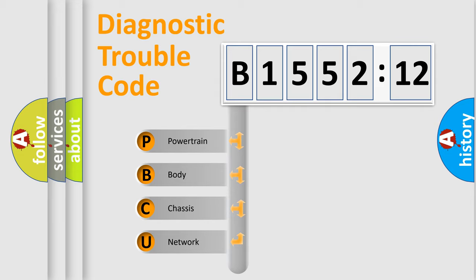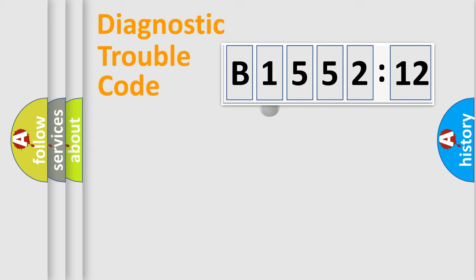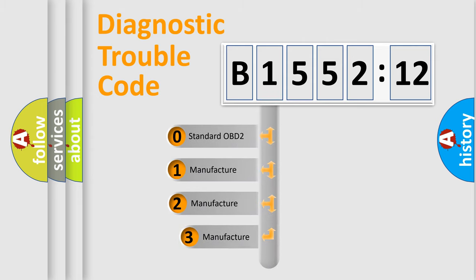We divide the electric system of automobile into four basic units: Powertrain, Body, Chassis, and Network. This distribution is defined in the first character code.